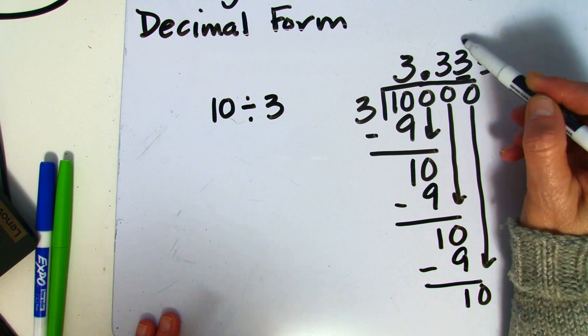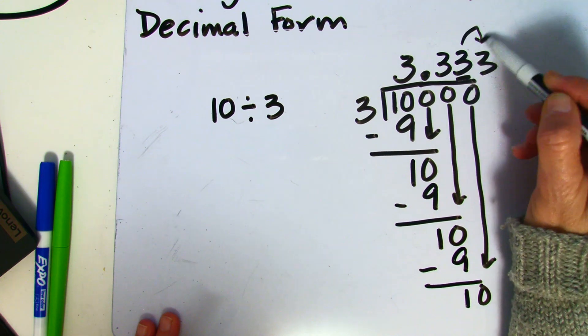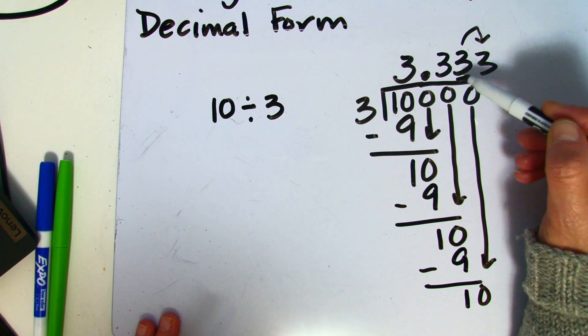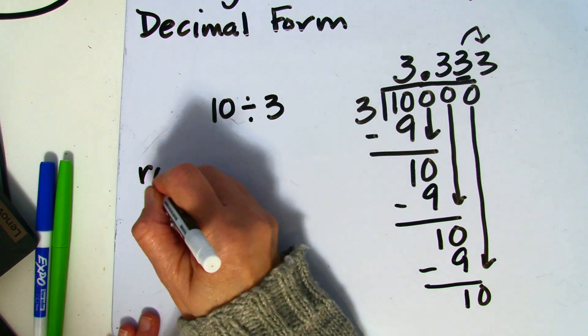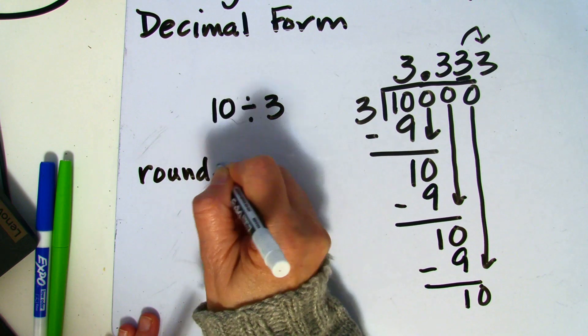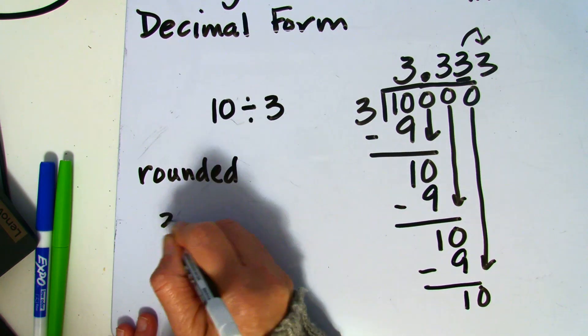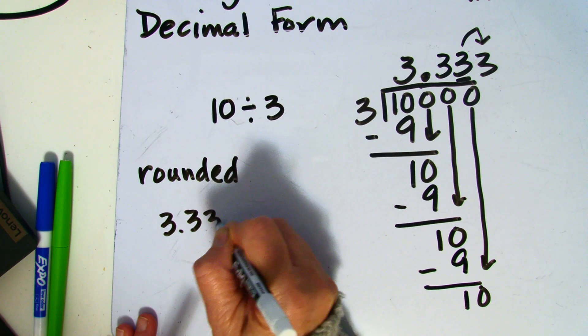Look to the right. That tells me I'm going to keep it at 3. So my rounded number would be 3 and 33 hundredths.